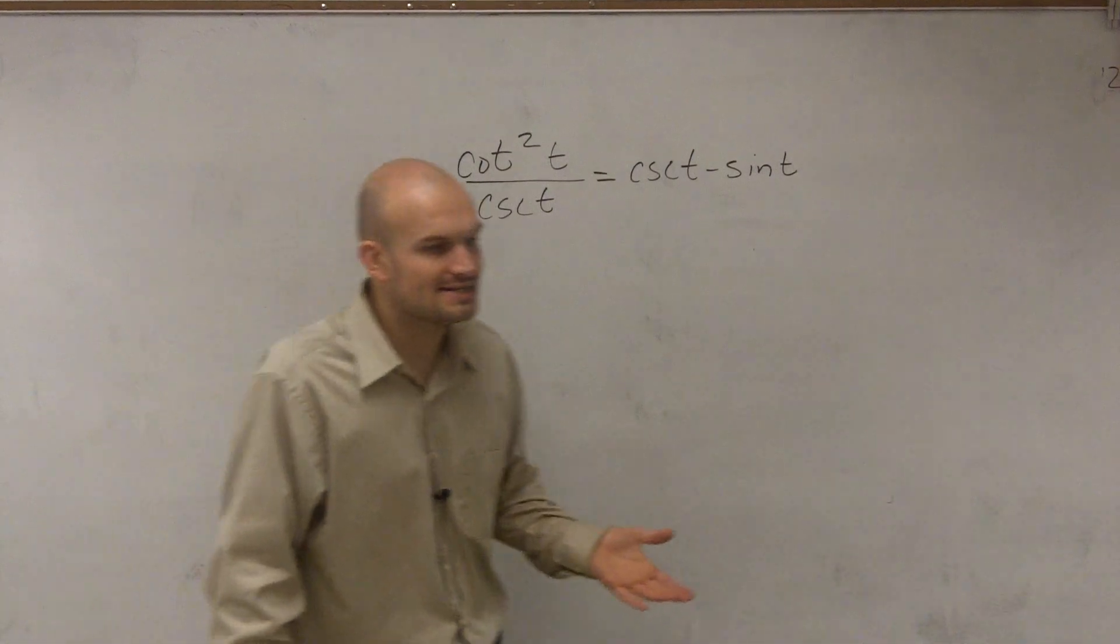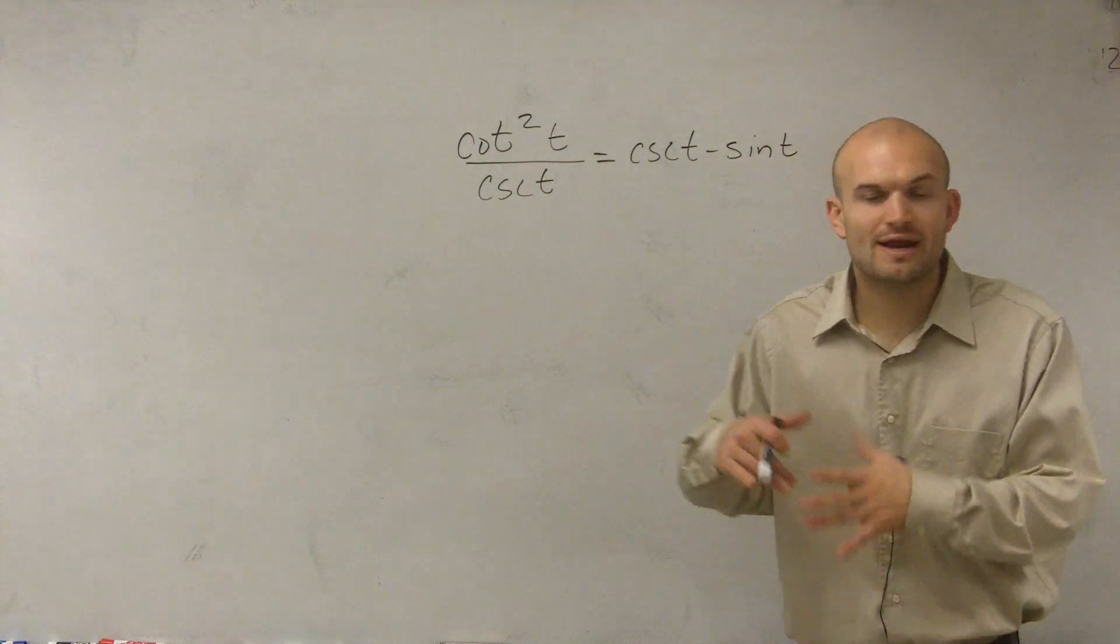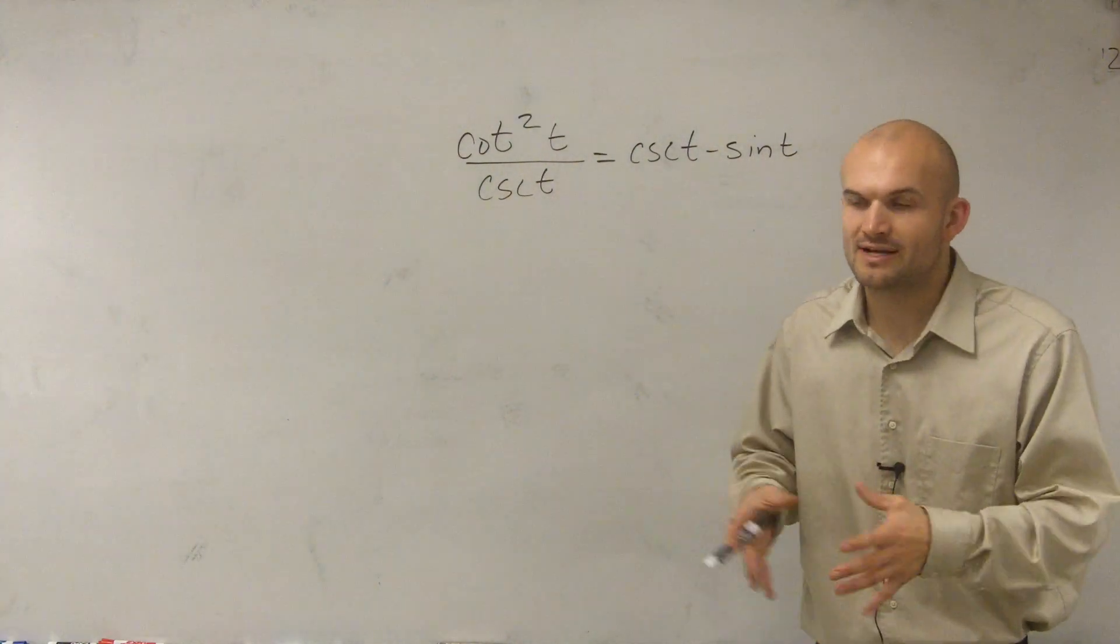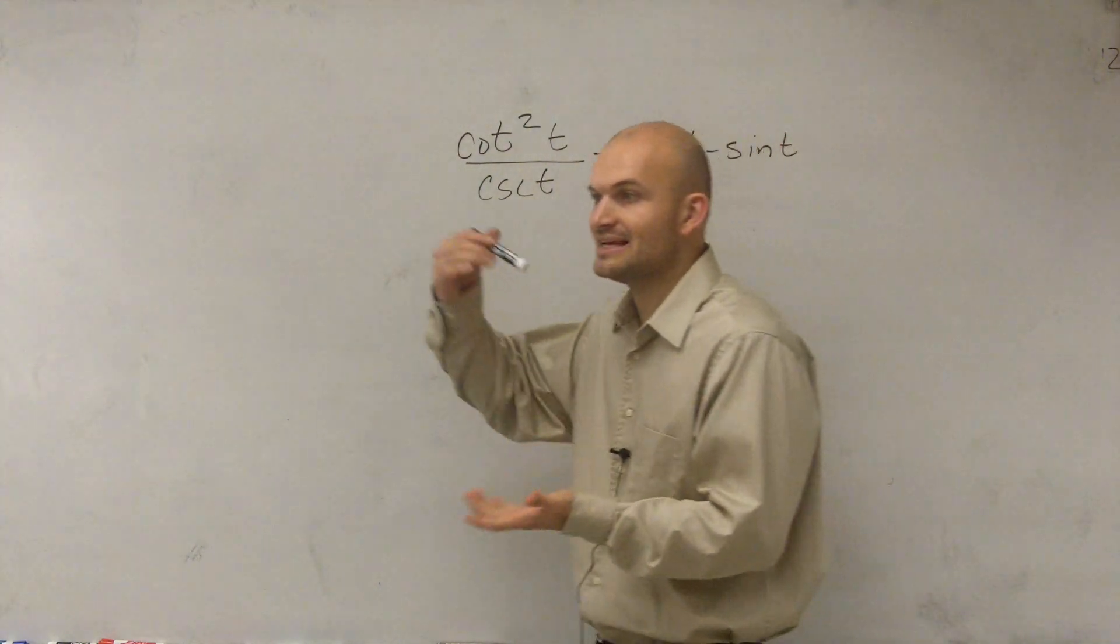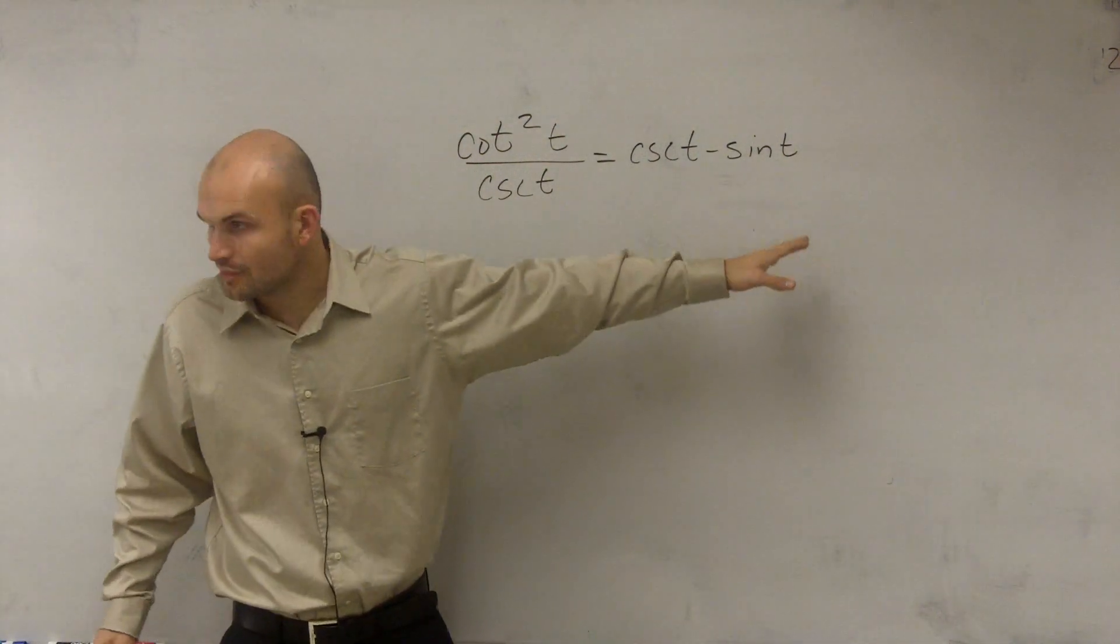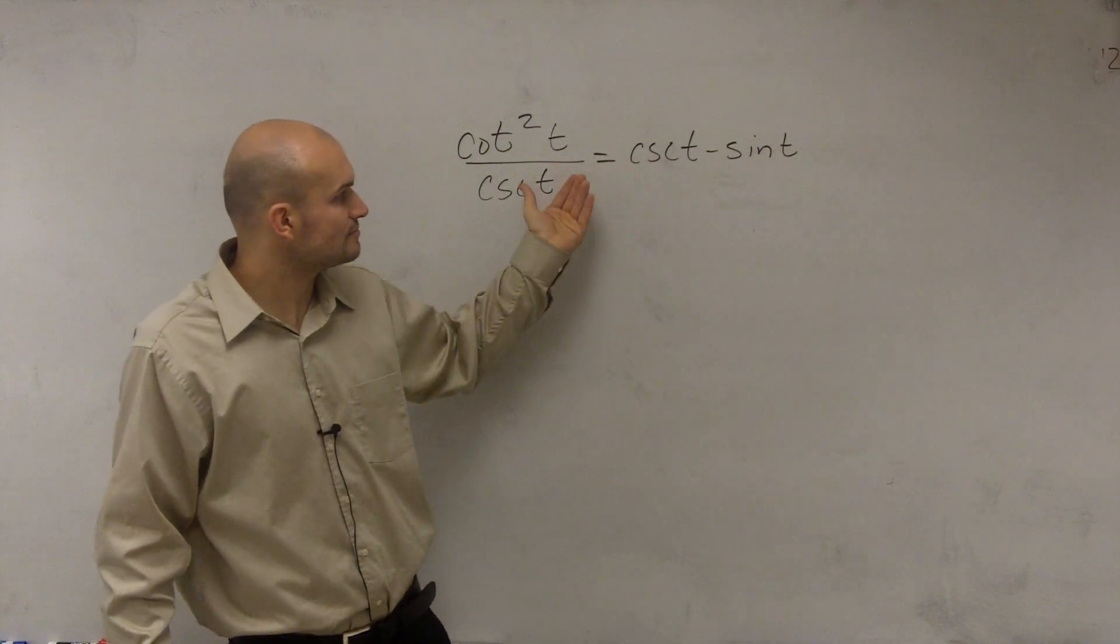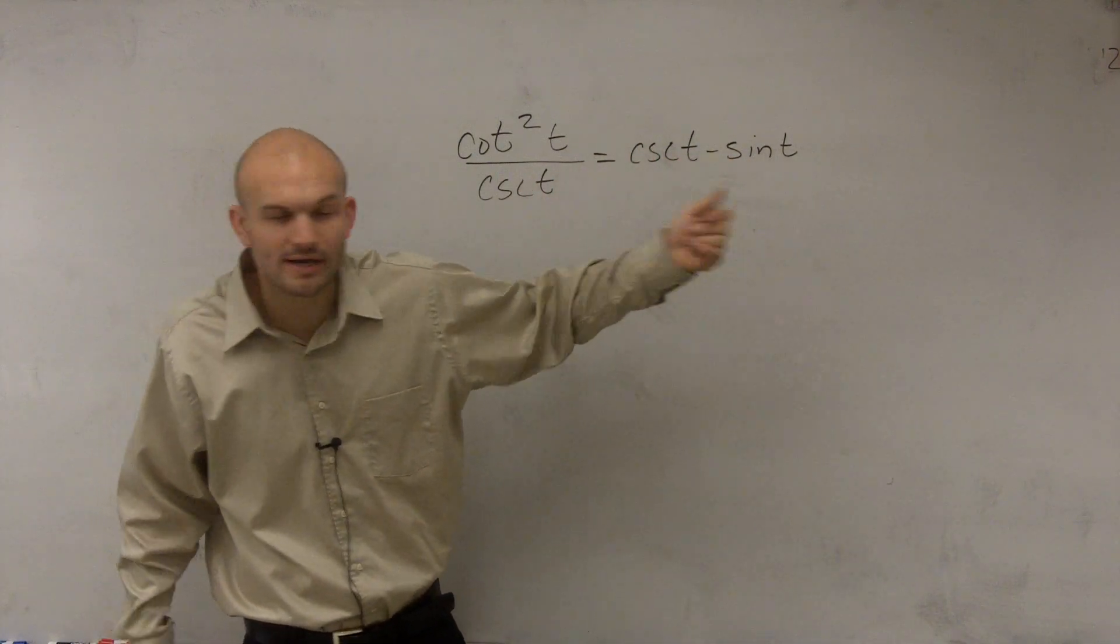And the side doesn't really matter, but usually we like to pick the side that's going to be the most complicated. Whatever you can work on to simplify it. So we're going to pick a side and then simplify that side. Hopefully, it's going to look like the other side, and then you can verify that you have a true statement or equation.